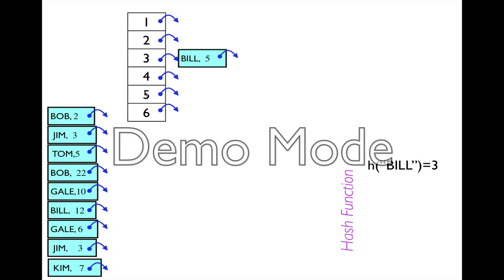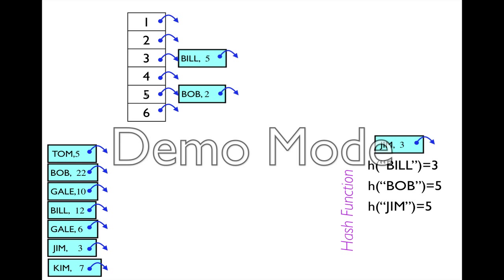Now we have Bob. The hash function for Bob is five, so we put Bob in entry five. Now we get Jim and the hash function for Jim is also five. So we map Jim to five. We have to see that there is something already in five, so we have to compare, see that Jim is not Bob, and we're going to add Jim to this linked list at the end. Next we have Tom. Tom maps to five again, and Tom is not Bob, Tom is not Jim, and we add Tom at the end.